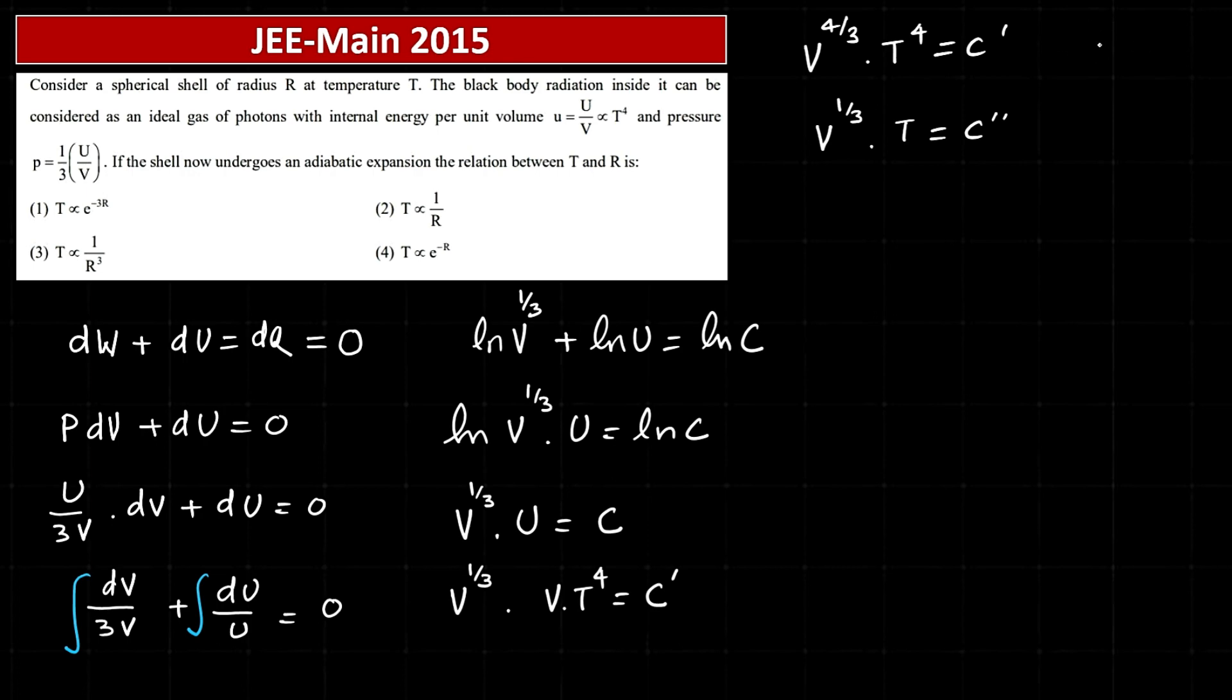We are talking about a shell. Its volume is 4 pi R cubed by 3, so the cube root of V is proportional to R. So the cube root of V is proportional to R.